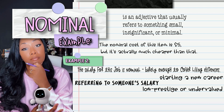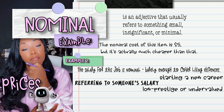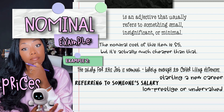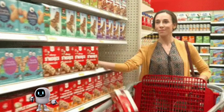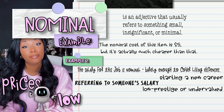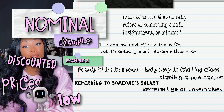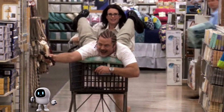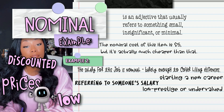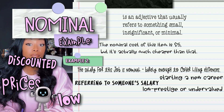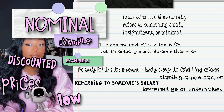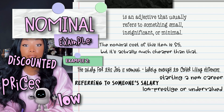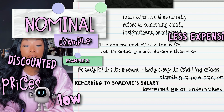Nominal can also be used when talking about prices. When something is referred to as being sold at a nominal price, it usually means that the item is low-priced or discounted, often cheaper than its original market value. Additionally, nominal can be used to describe items that are less expensive than their competitors, such as certain electronics or clothing items.